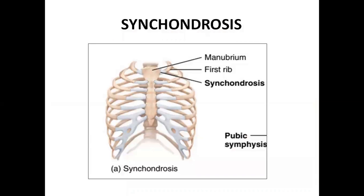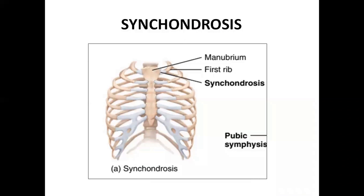Synchondrosis - these are cartilaginous joints where you can see, between the sternum and the ribs, especially the head part of the sternum called the manubrium connected with the ribs. These mostly consist of hyaline cartilage, which is smooth in appearance, connecting these two things together. We're going to talk about that in the next slide.